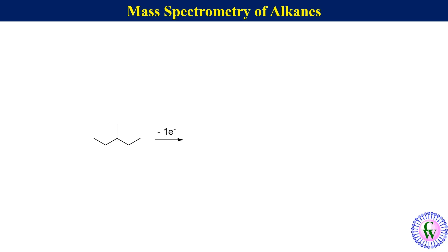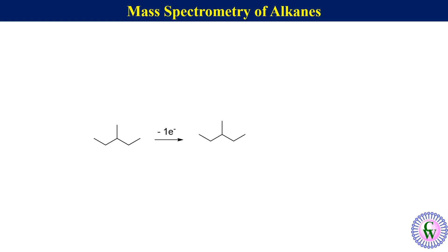After electron bombardment, one of the C–C sigma bond electrons gets eliminated to produce the molecular ion. As we have seen, the most likely cleavage is at the most substituted carbon, so these two will be the most likely molecular ion structures. The general structure of the molecular ion of any molecule can be represented by drawing the molecule and placing a radical cation over an inverted L. This will be the general structure of the molecular ion of 3-methylpentane.